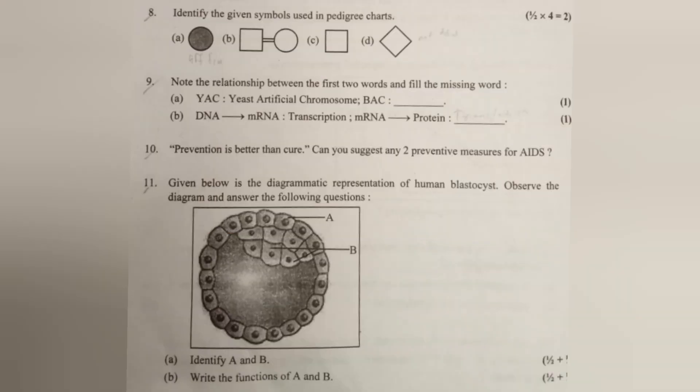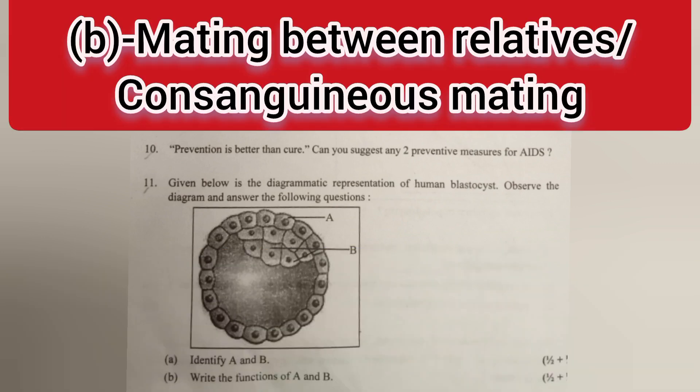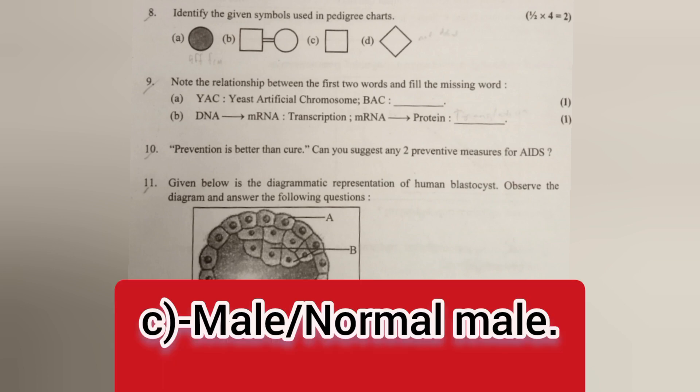Question 8: Identify the given symbols used in pedigree charts. Answer: A. Affected female or affected individual. B. Mating between relatives or consanguineous mating. C. Male or normal male.